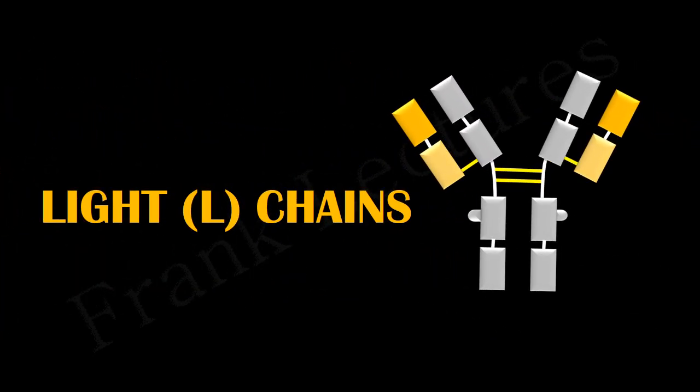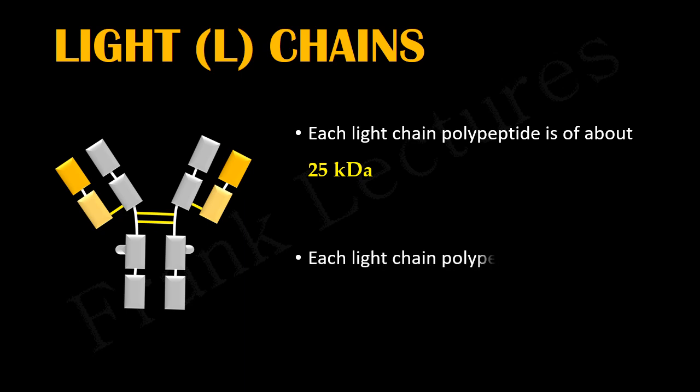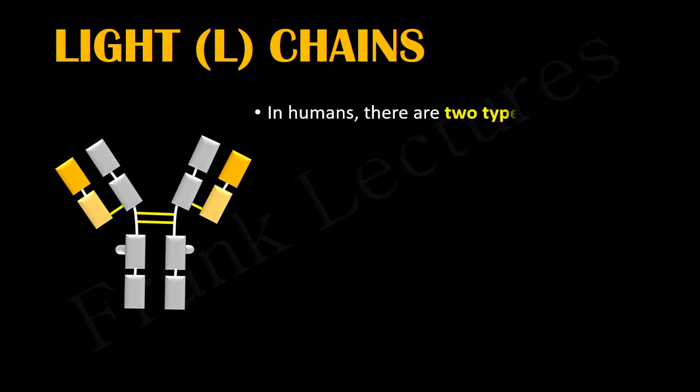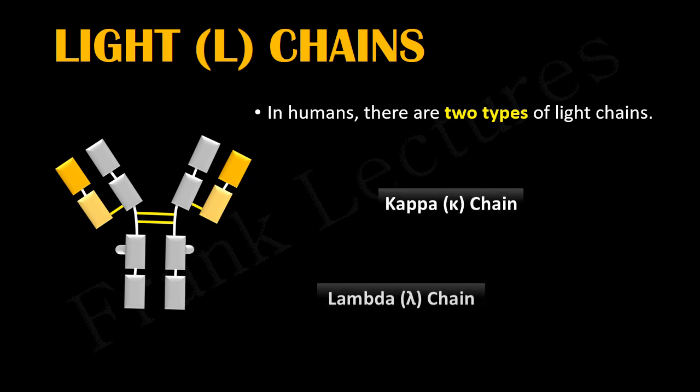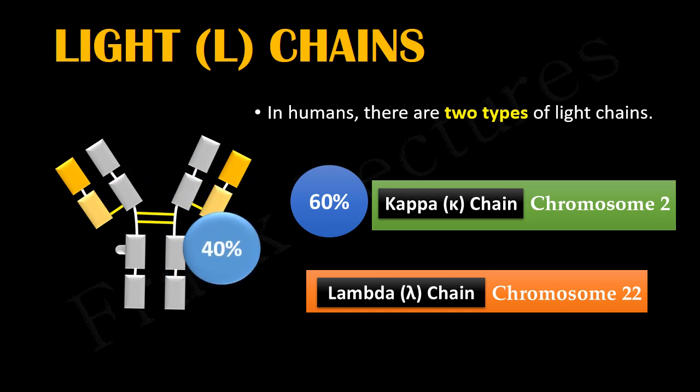Light chains: As we said before, these are the two shorter subunits of basic antibody molecule. Each light chain has a molecular weight of about 25 kilo Daltons and each contains about 220 amino acids. In humans, there are two types of light chains: Kappa chain and lambda chain. They are similar in structure and function, but they are coded by different genes. Kappa chains are encoded on chromosome 2 and lambda chains are encoded on chromosome 22. It is important to note here that each antibody molecule produced by a B cell will either have kappa or lambda light chain, but never both. In humans 60% of light chains are kappa and 40% are lambda.